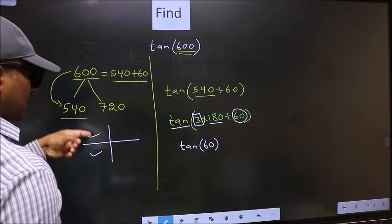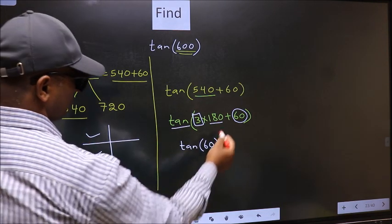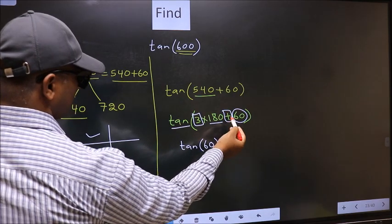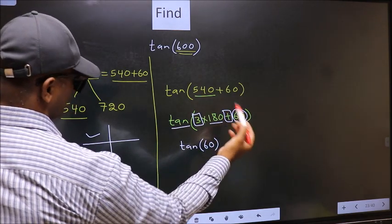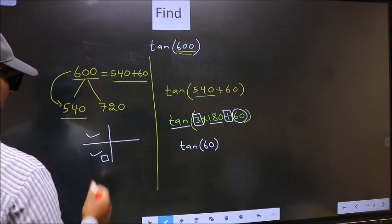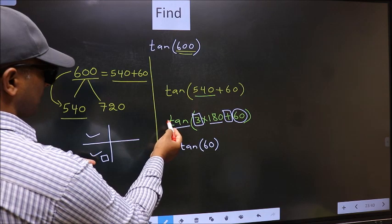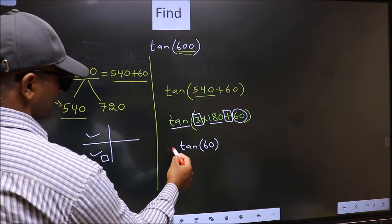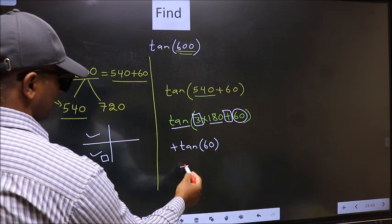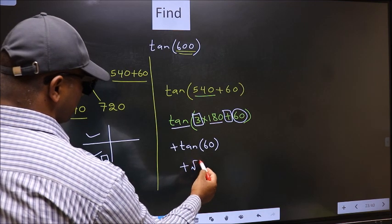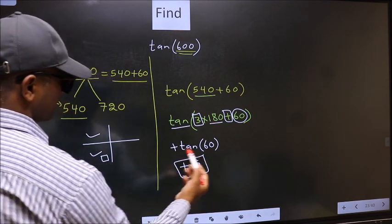So now to select the quadrant, we should look at this symbol. Here we have plus, that means the angle lies in the third quadrant. And in the third quadrant, tan is positive. So we should put plus. Plus tan 60 is root 3. This is our answer.